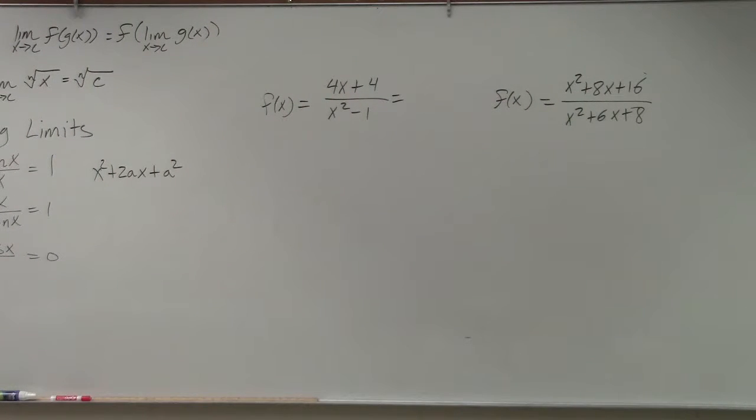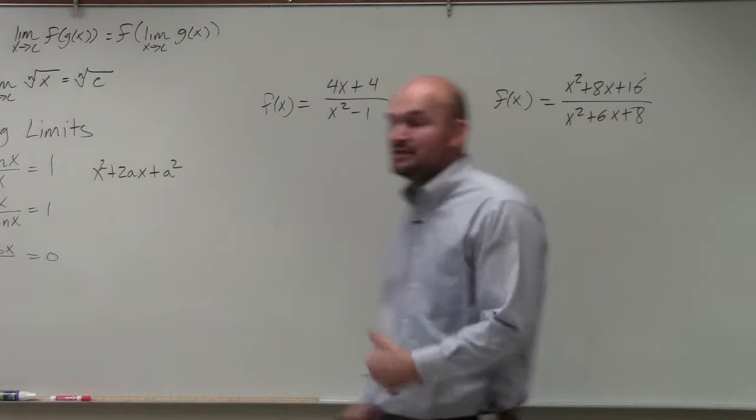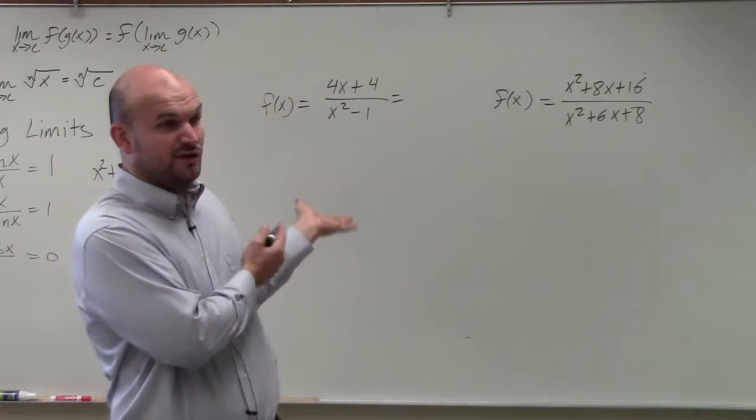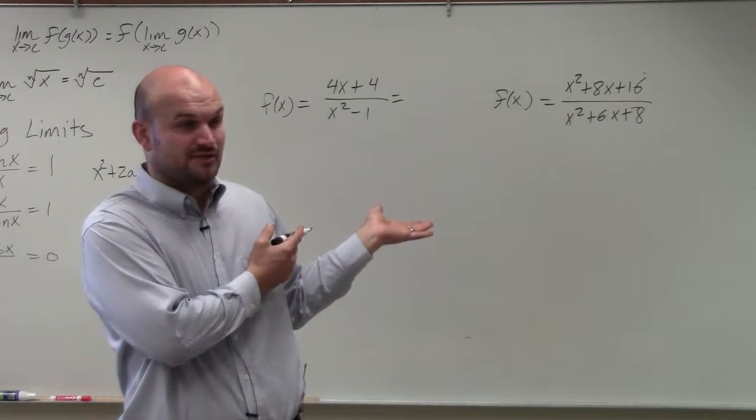So in this first example, ladies and gentlemen, if I'm asking to identify the discontinuities, we know that the implied domain is all the values that are going to give you real numbers. So we know that the only values where it can't be is where our denominator is equal to zero, correct?